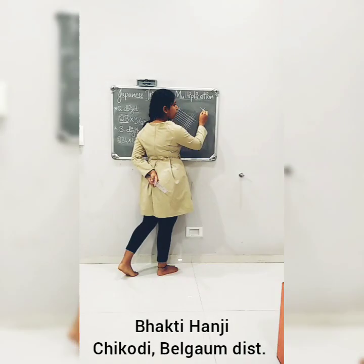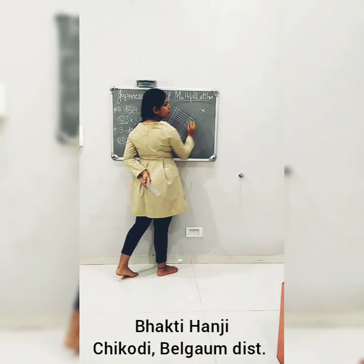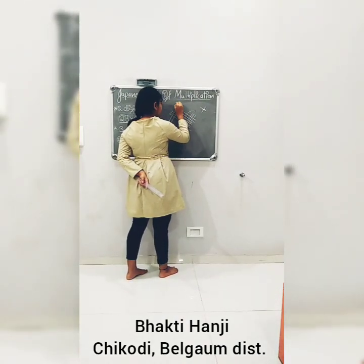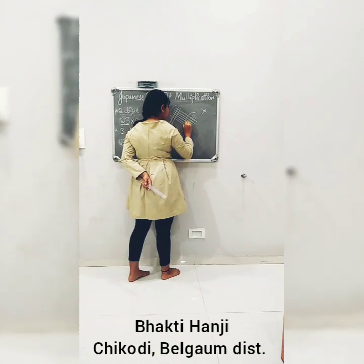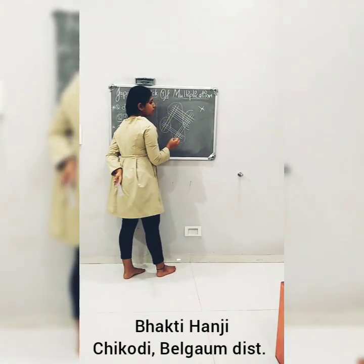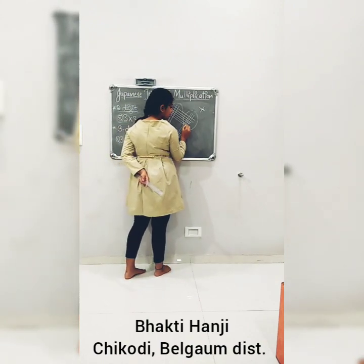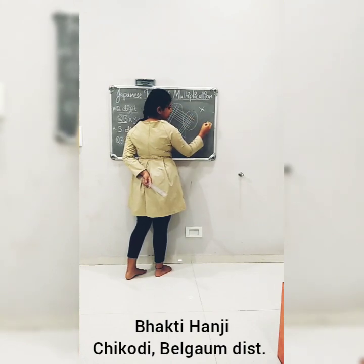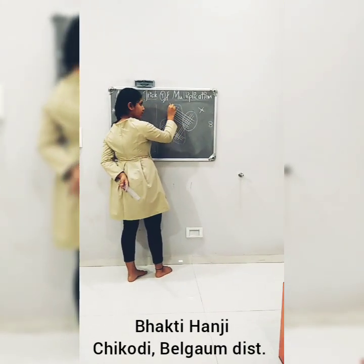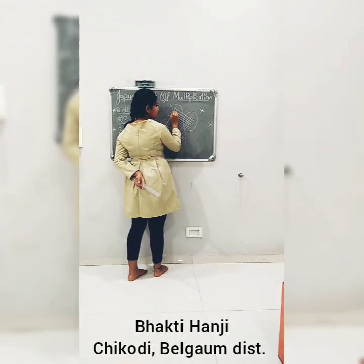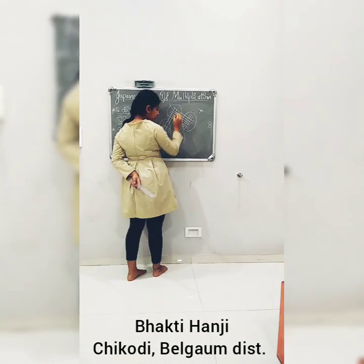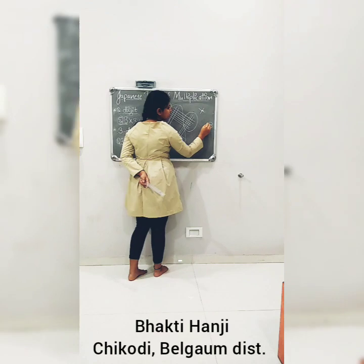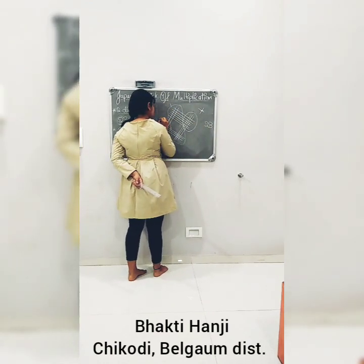Now here we should count the intersecting points of the lines. There are 3 parts. This is part 1. The combination of these 2 is part 2. And this is part 3. So let us start counting. In part 3 we count 1 through 22. So 2 goes here and 2 goes as carry.